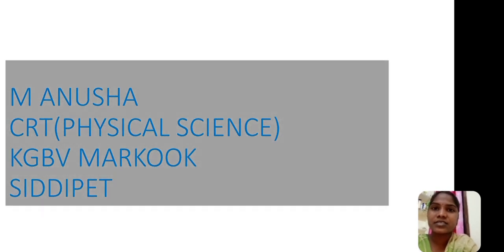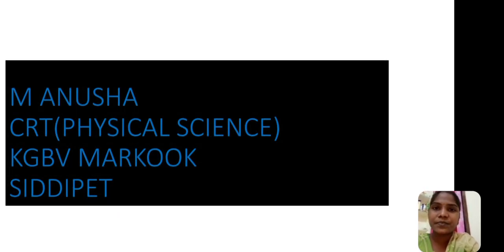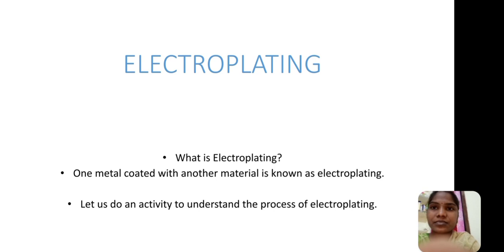Today's my topic is Electroplating. What is Electroplating? One metal coated with another material is known as Electroplating. One more definition also is there. Inferior metal is coated with superior metal is known as Electroplating.